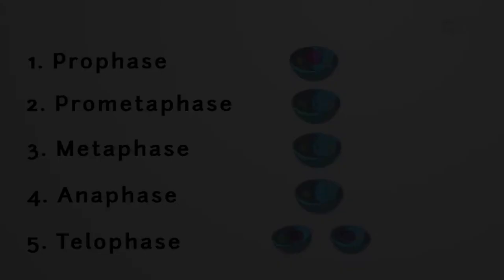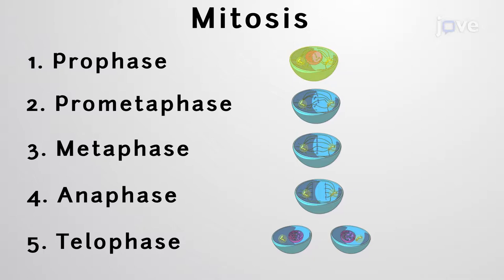Comprised of five unique stages, mitosis is a form of division where a cell's genetic material is partitioned between two daughter cells.